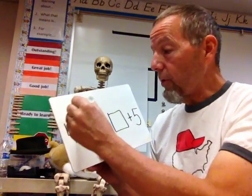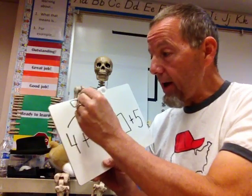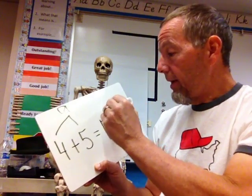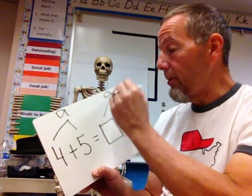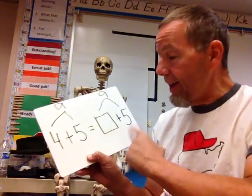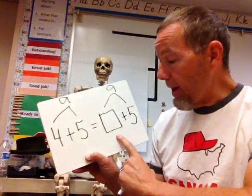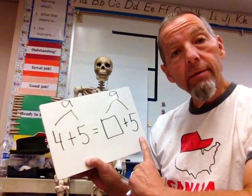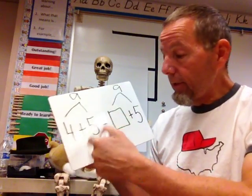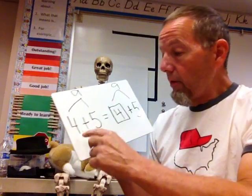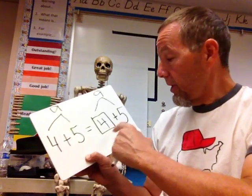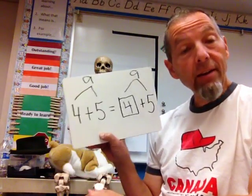So, I'm going to do this. 4 plus 5 that's 9 and put that up here. And I'm going to put a 9 up here because whatever is on this side it's got to equal 9. What number plus 5 gives me 9? I look over there. There it is. 4 plus 5 equals 4 plus 5. Look how simple that is but you've got to stop and think.